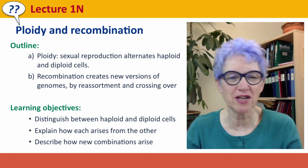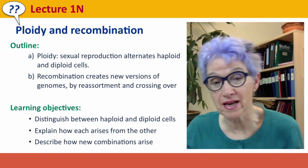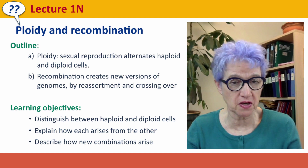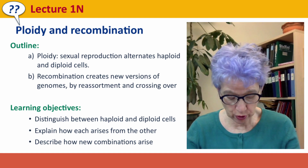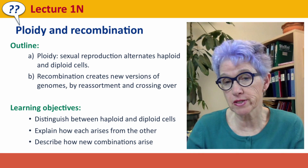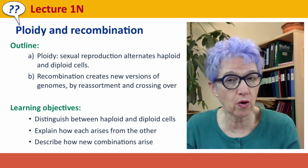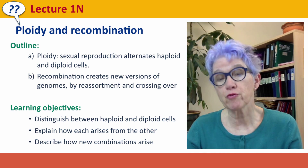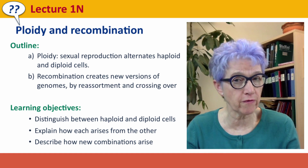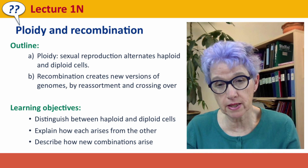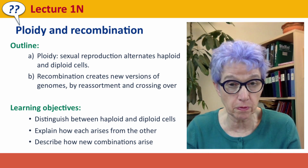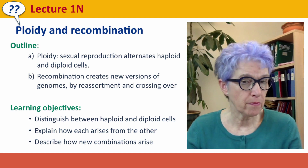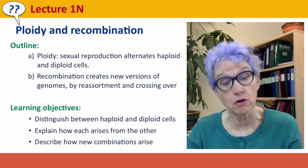Hi everyone, welcome back to Useful Genetics. This is Lecture 1N. We're talking about ploidy and recombination, building on the basic understanding of life cycles from the previous lecture. We're going to talk about how ploidy changes in sexual reproduction, how we alternate between haploid and diploid cells, and how recombination — part of producing haploid gametes and bringing them back together to diploids — creates new versions of genomes in two ways: reassortment and crossing over.